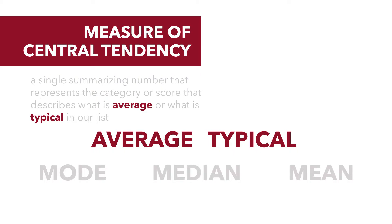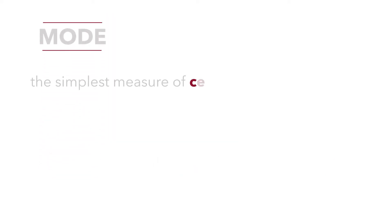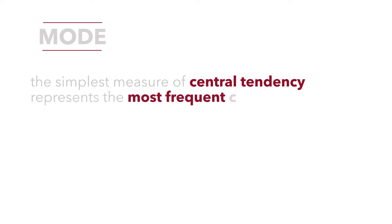We'll talk about each of these in a separate tutorial. We're going to begin with the mode. The mode is the simplest measure of central tendency, and it just represents the most frequent category.